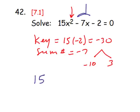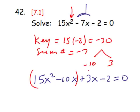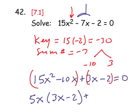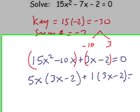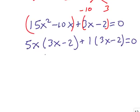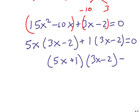That is how we split up the negative 7x into negative 10x and positive 3x. So we have 15x squared minus 10x plus 3x minus 2 equals 0. We do our grouping, and out of the first grouping we can factor 5x, leaving us with 3x minus 2. Out of the second grouping there's nothing to factor, so the common factor is just 1, giving us 1 times 3x minus 2 equals 0.